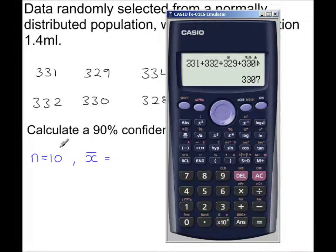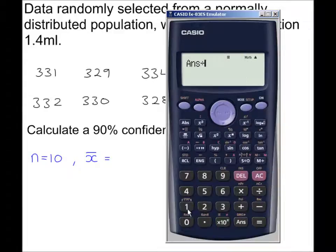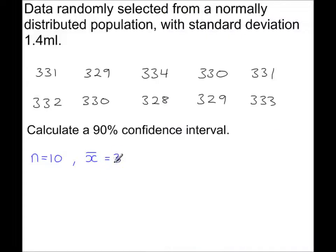3,307 is the sum of all the data. Divide by N, which is 10. That will give you a sample mean of 330.7 millilitres.